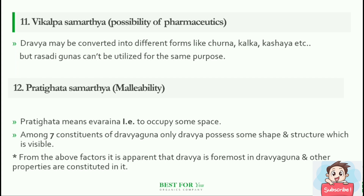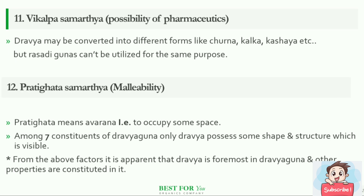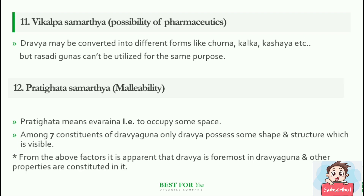Vikalpa Samarthya — possibility of pharmaceutics. Dravya may be converted into different forms like Churna, Kalka, Kashaya, etc., but rasadi gunas cannot be utilized for the same purpose. Pratighata Samarthya, which means malleability — Pratighata means avarana, that is to occupy some space. Among the seven constituents of Dravyaguna, only Dravya possesses some shape and structure which is visible.